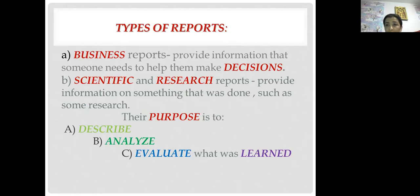So we have got the following types of reports. We have got business reports. In business report, it provides information that someone needs to help them make decisions. The second type of reports we have are the scientific and research reports. They provide information on something that was done, such as some research. Their purpose is to describe, analyze, and evaluate what was learned. It means you should describe the event, afterwards you should step to analysis, and at the end it should be finished with evaluation about what you learned.